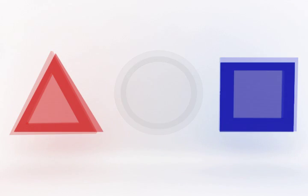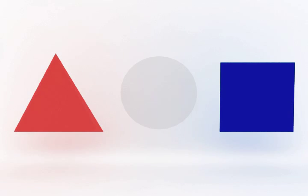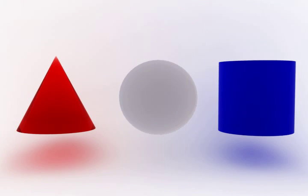These are flat projections of three-dimensional primitive objects: the cone, the sphere, and the cylinder.